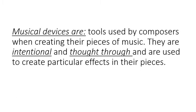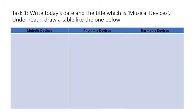There are three main types of musical devices that composers constantly think about when creating melodies, rhythms and harmonies. The first task I'd like you to do is create a table in your blue books. Start by writing today's date and the title 'Musical Devices', then draw a table with three headings: melodic devices, rhythmic devices and harmonic devices. Use your pen or pencil and ruler to create that table, then pause the video.